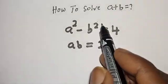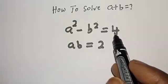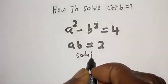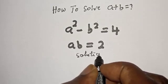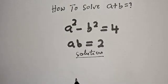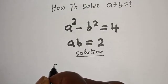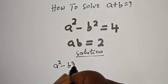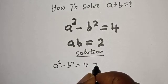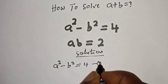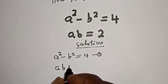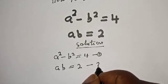But before we proceed, let's label our equations. We have a squared minus b squared is equal to 4 — let's call this equation 1. Then, ab is equal to 2 — let's call this equation 2.